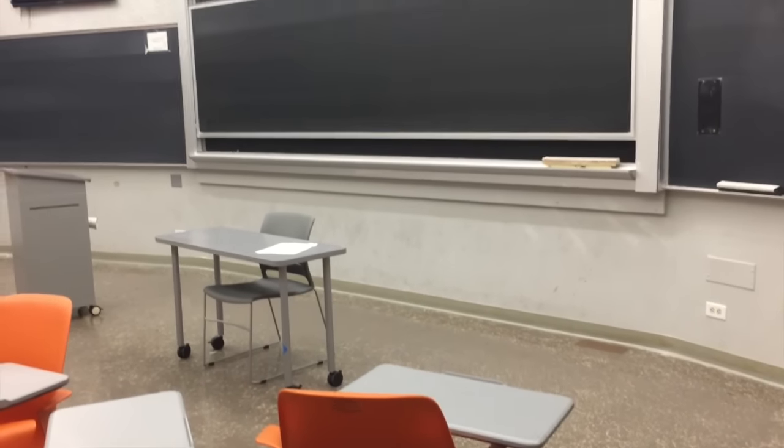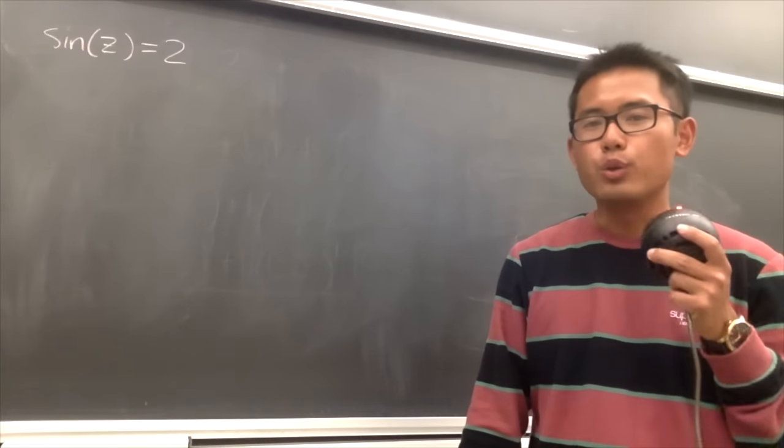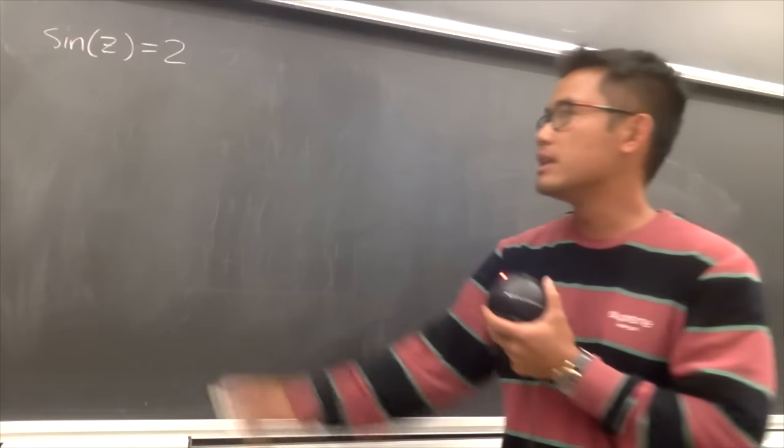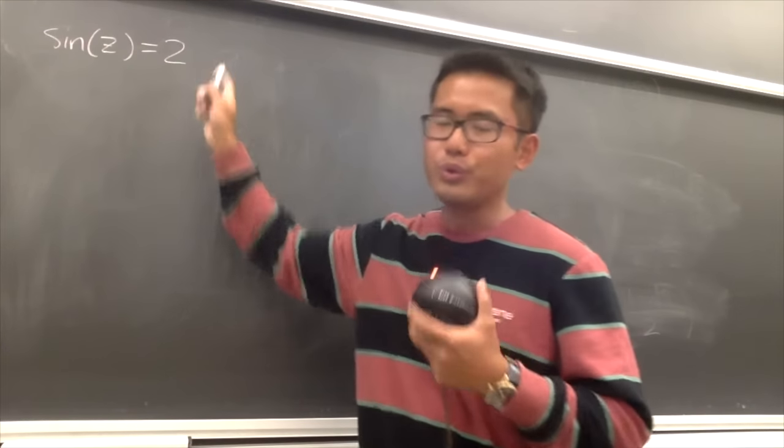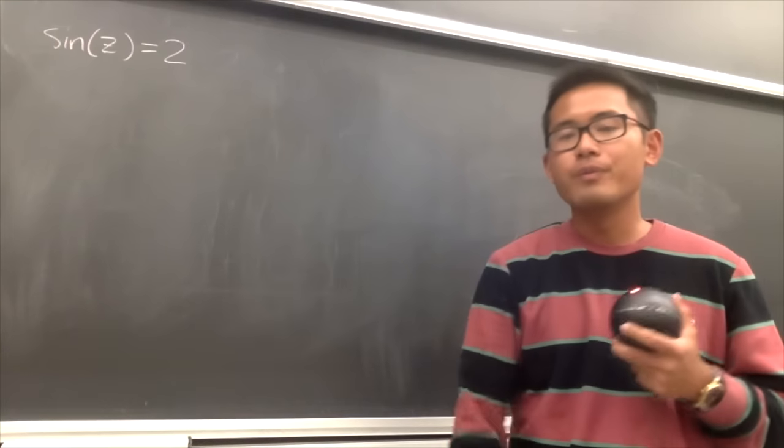Surprisingly there are two televisions — cool! I'll be using the middle board. As you can see, the eraser here at UC Berkeley is long. We'll do something challenging in this video. The question we're going to solve is: sine z equals 2. Is that even possible?